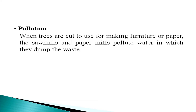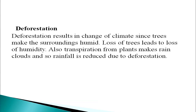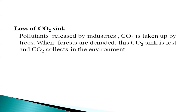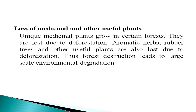When trees are cut for making furniture or paper, the sawmills and paper mills pollute the water into which they dump their waste. Deforestation also results in climate change: since trees make the surroundings humid, loss of trees leads to loss of humidity. Transpiration from plants makes rainwater clouds and so rainfall is reduced due to deforestation. Forests also act as carbon dioxide sinks; when forests are denuded, this carbon dioxide sink is lost and carbon dioxide collects in the environment. Unique medicinal plants that grow in certain forests, as well as aromatic herbs, rubber trees and other useful plants, are also lost due to deforestation. Thus, forest destruction leads to large-scale environmental degradation.